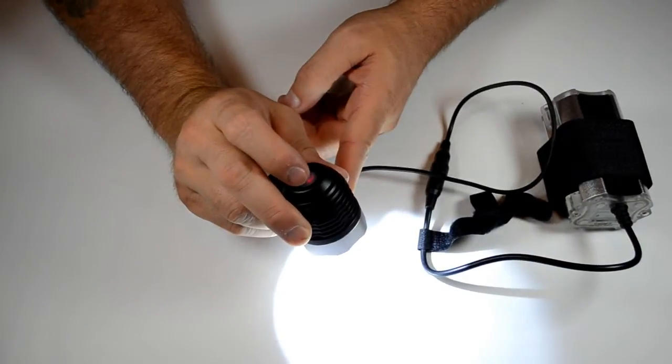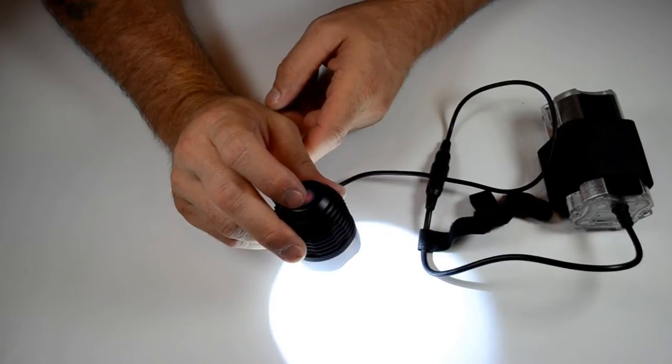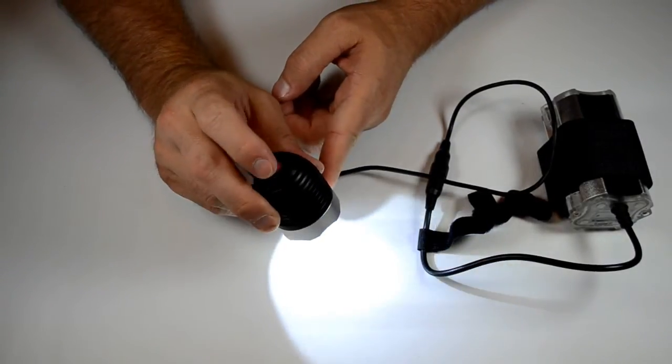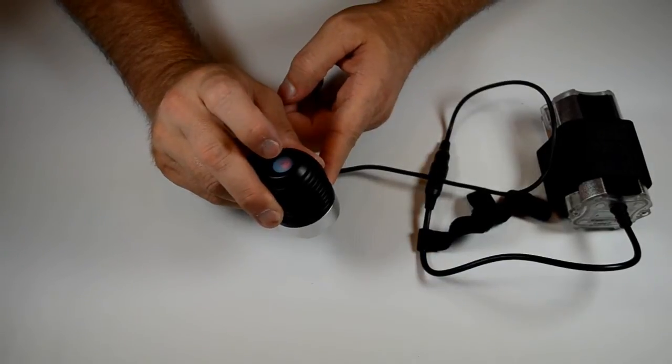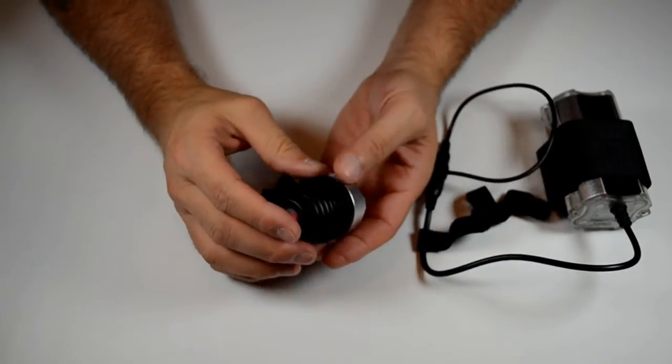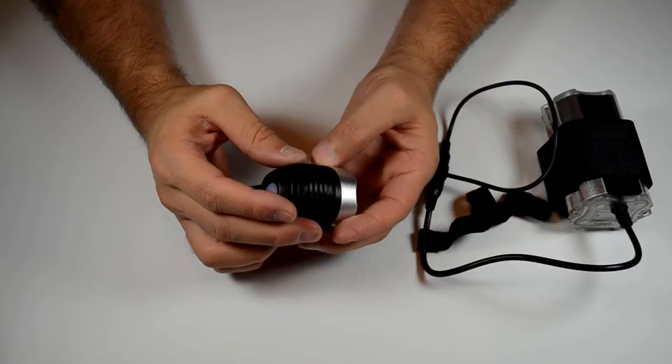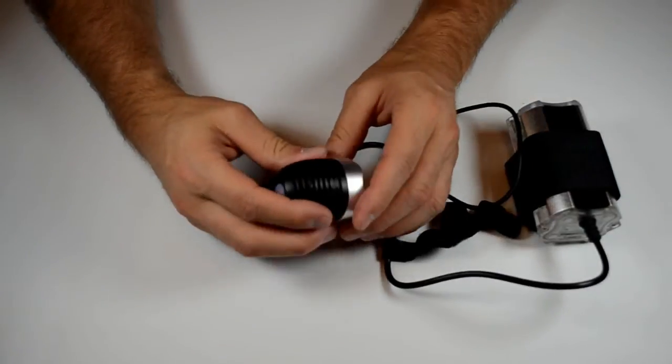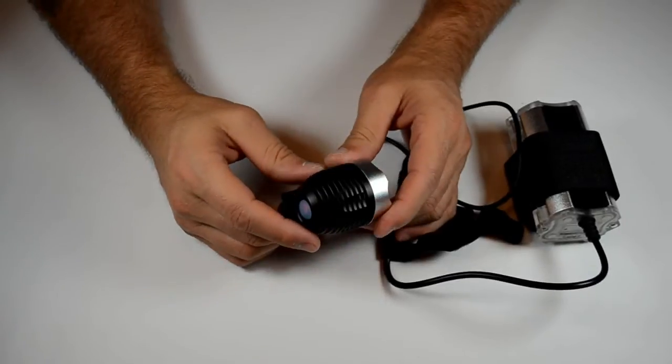So its highest level of output is 1000 lumens and it's got a beautiful beam on it. As in the other model I showed you, it's got high-grade aluminum with the HA3 hard coating.